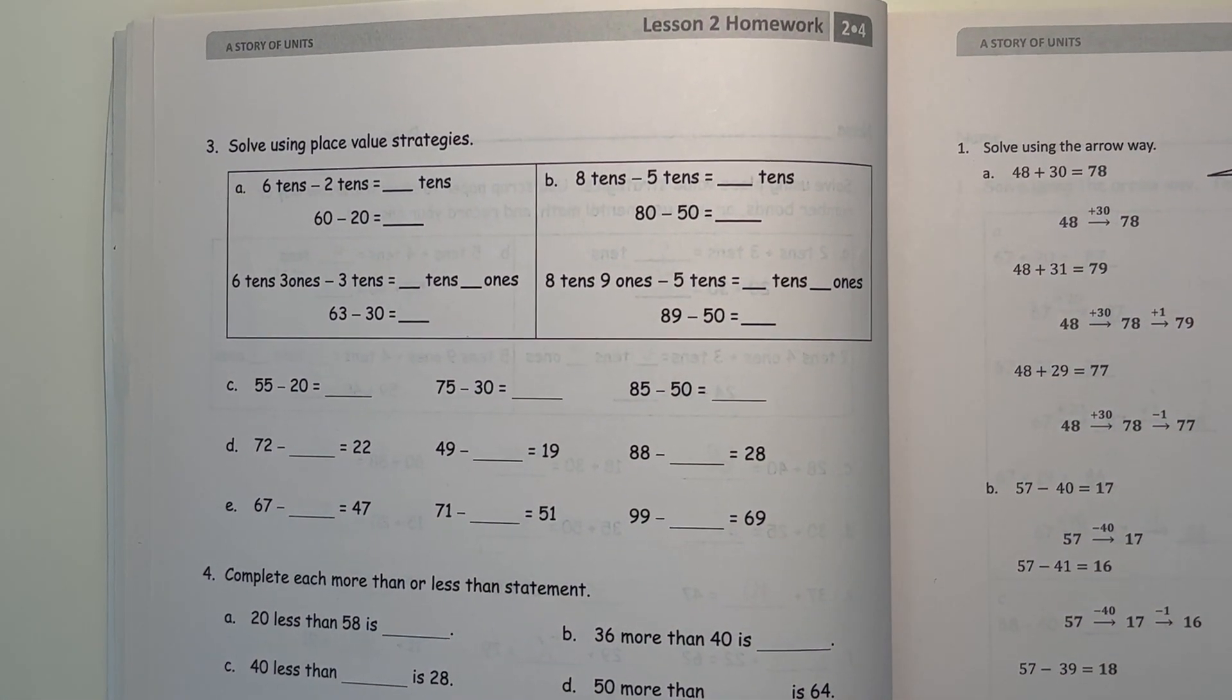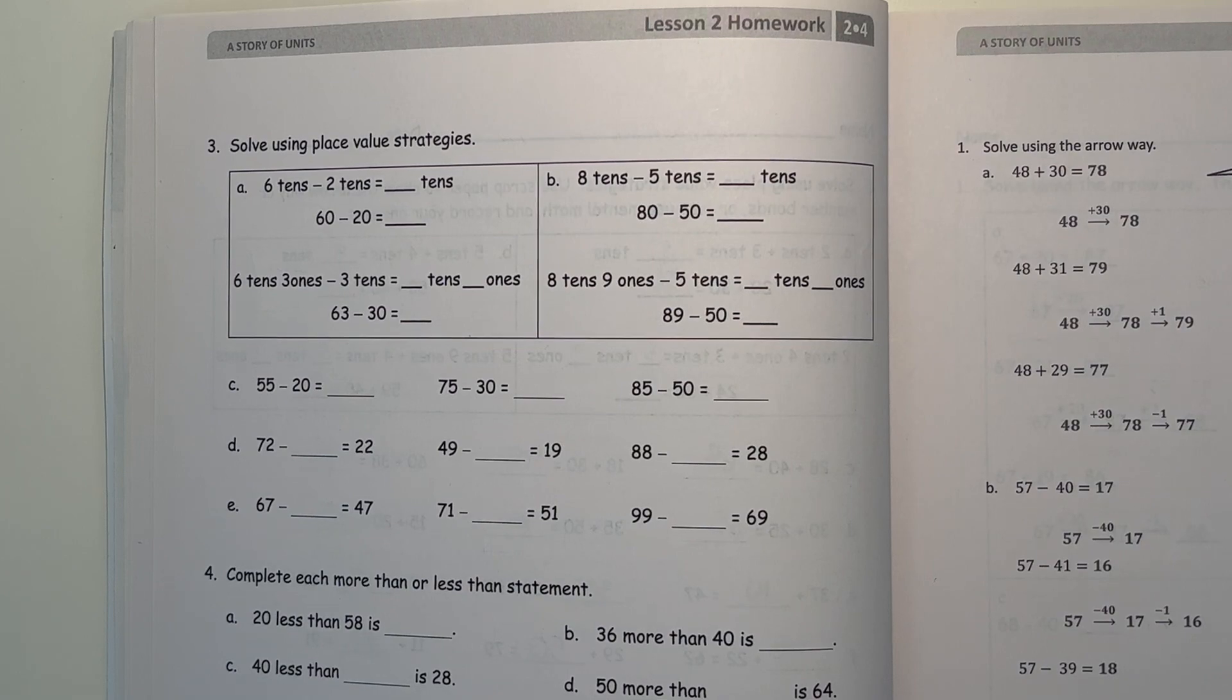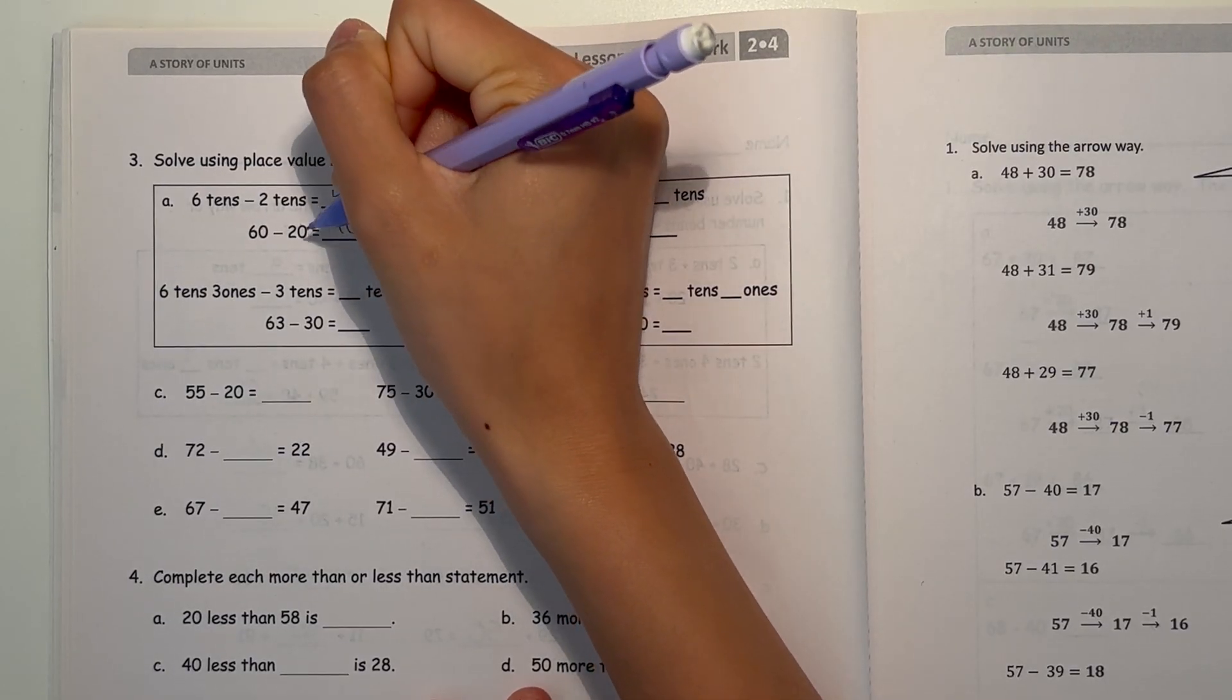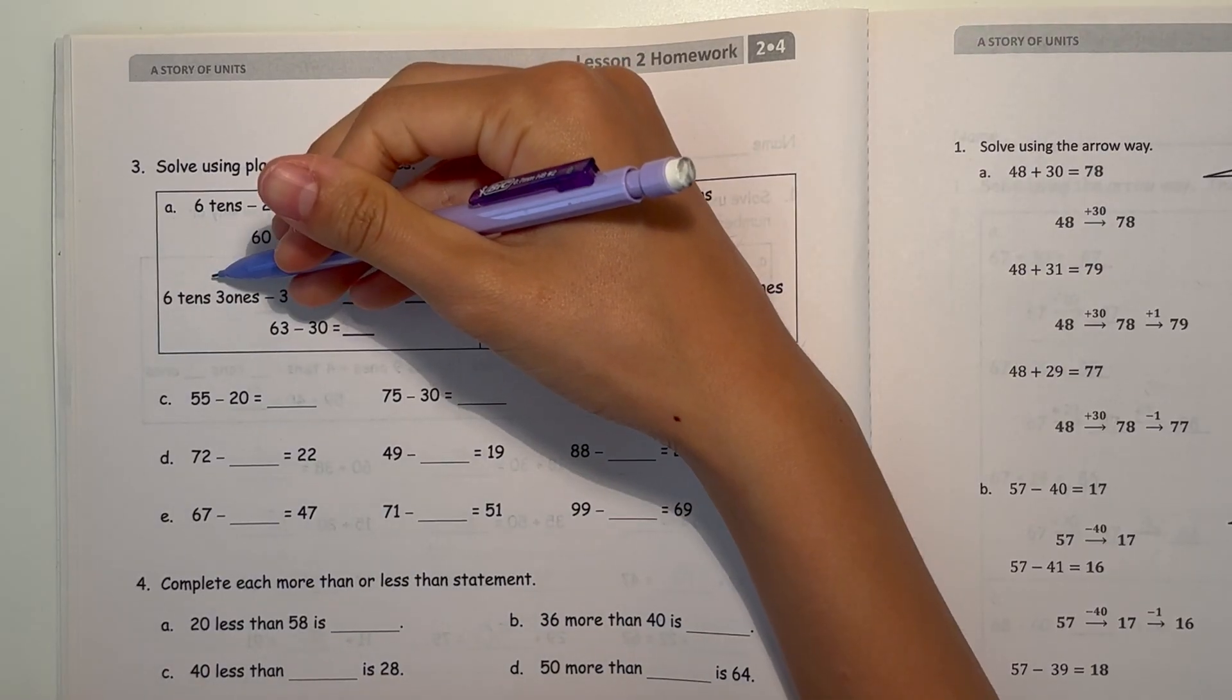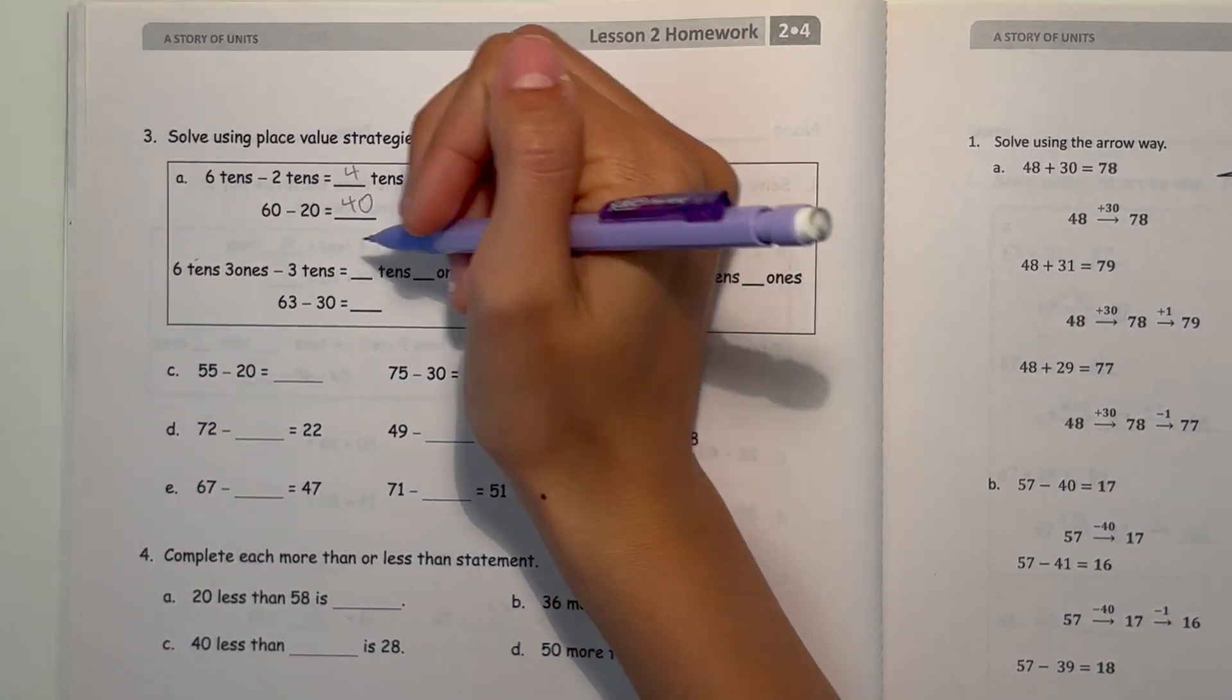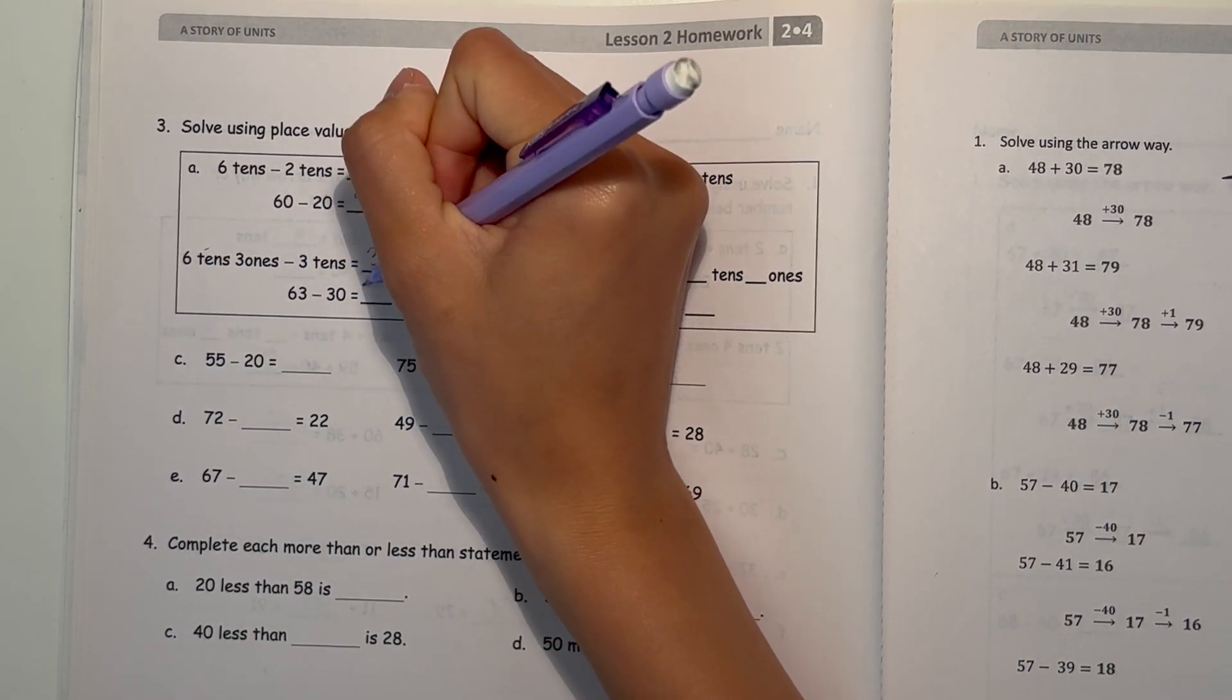Number 3, solve using place value strategies. So A, 6 tens minus 2 tens. That's 6 minus 2, which is 4 tens. So 60 minus 20, that's 40. And now here we have 6 tens, 3 ones, minus 3 tens. So 6 tens minus 3 tens is 3 tens, and then 3 ones. 63 minus 30 is 33.